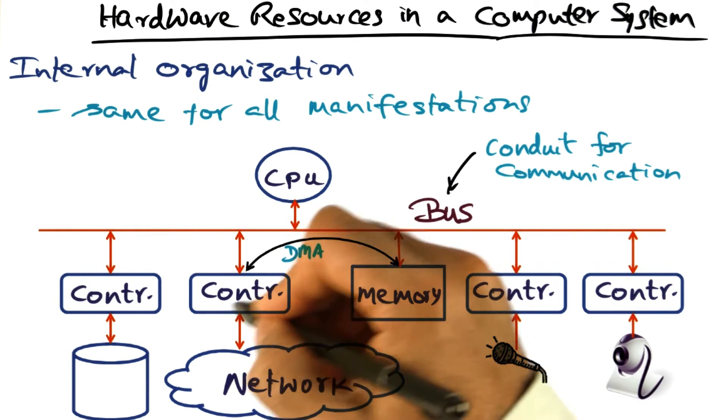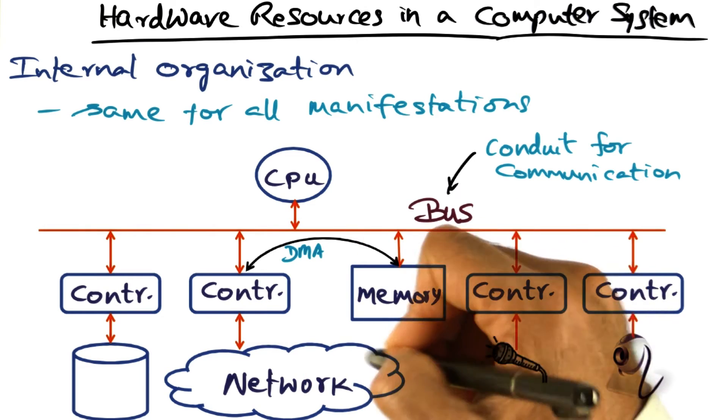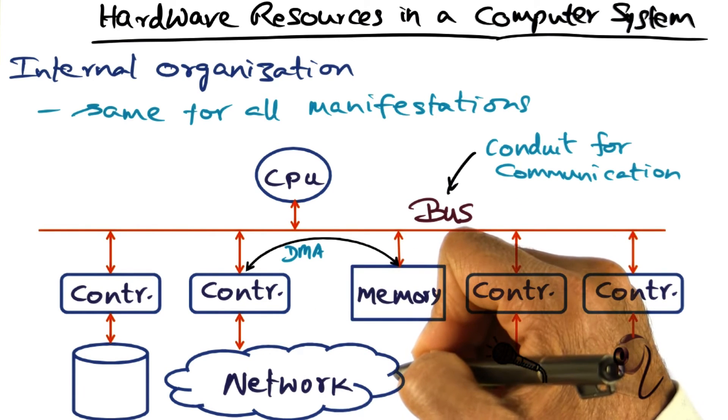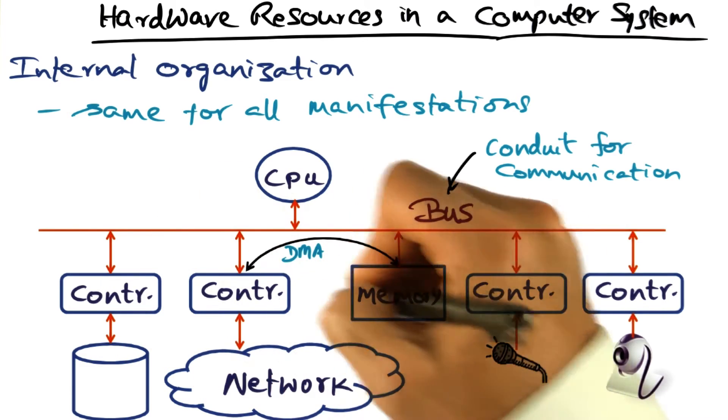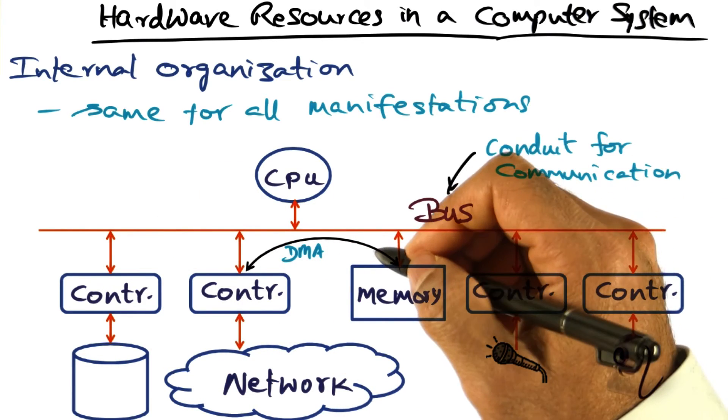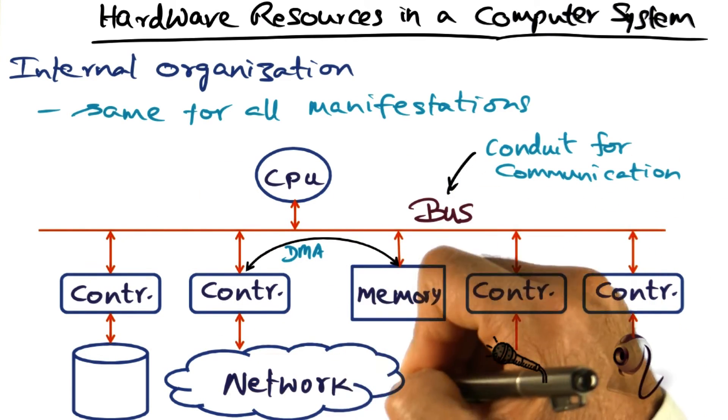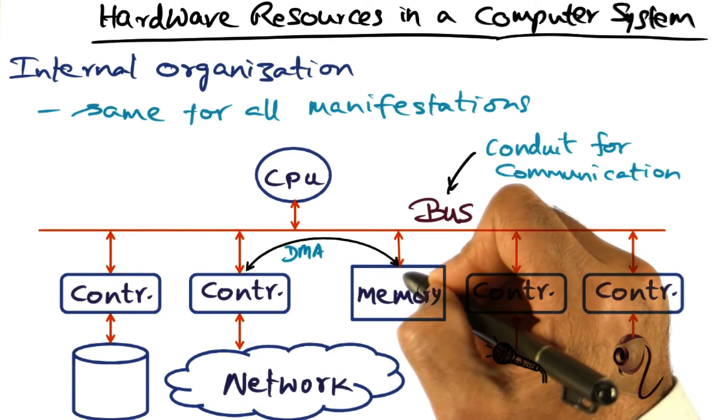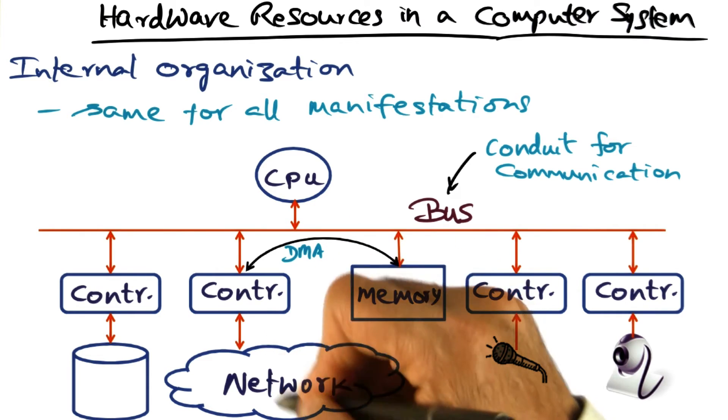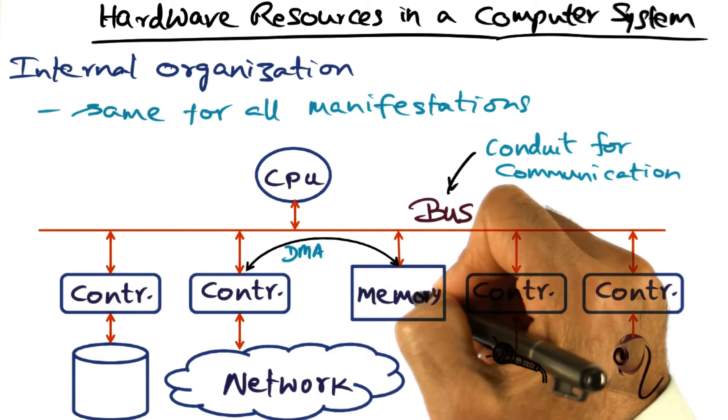Depending on the sophistication of the device that we're talking about and the speed of the device, these controllers may have different capabilities. For instance, a network controller may have the ability to move the data directly from the memory into the network or from the network into the memory.